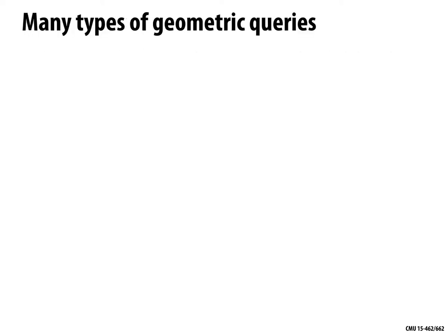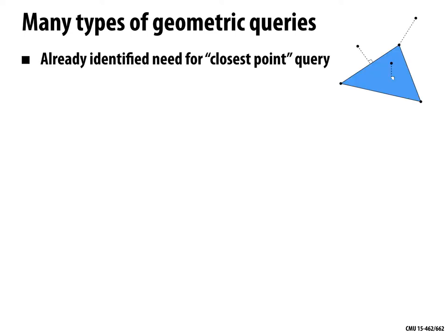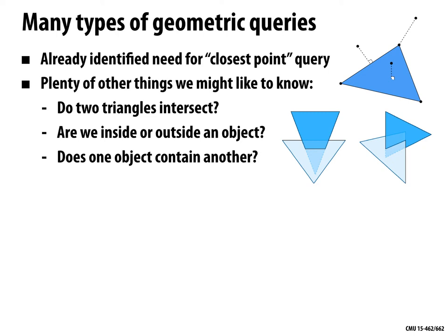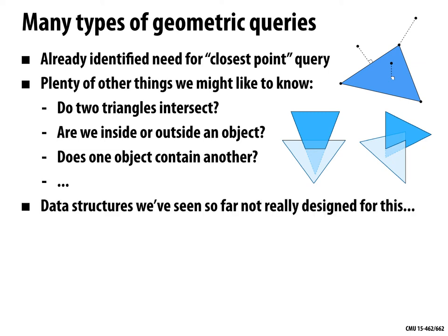Beyond closest point queries, there are many other geometric queries we might like to apply. Do two triangles intersect? Where and how do they intersect? Are we inside or outside an object? Does one object contain another? Geometric queries are about asking relative questions about two pieces of geometry. The data structures we've seen — half-edge meshes, incidence matrices, adjacency lists — were designed for local neighborhood information, not spatial queries. We need new ideas.